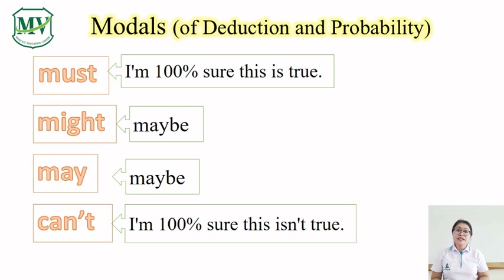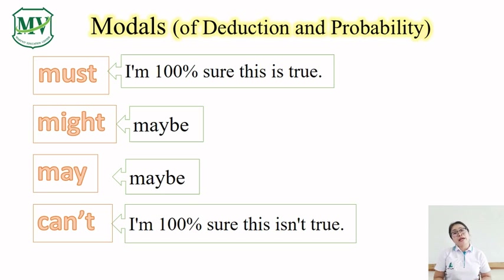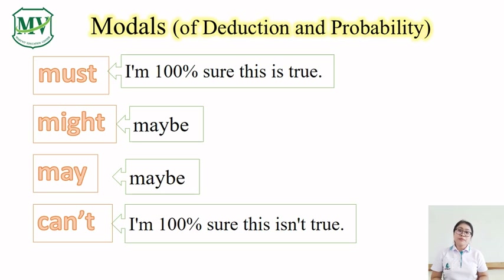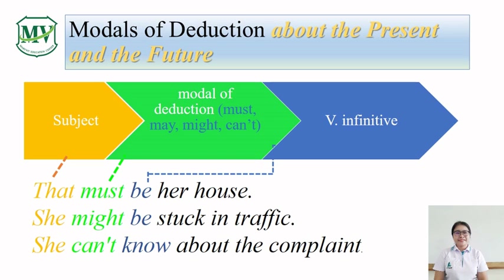We use 'must' as a modal of deduction when we are sure that something is true — we are 100% sure that it is true. We use 'may' or 'might' when we are not sure if something is true. And finally, we use 'can't' for something that we are sure is impossible, or we are sure that it is not true.